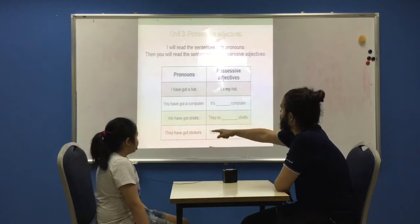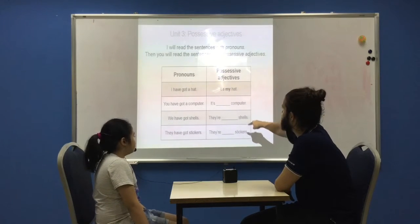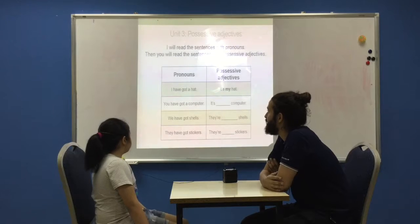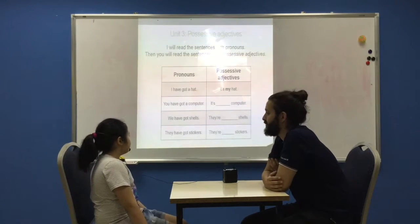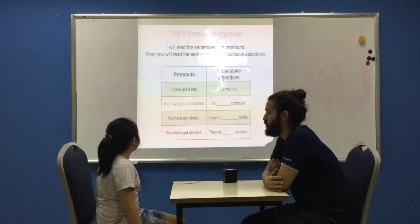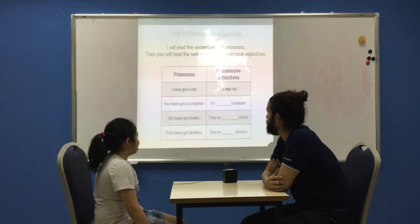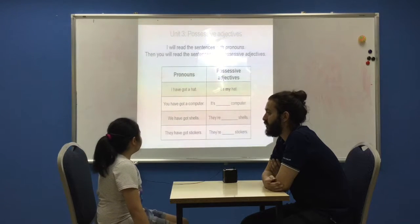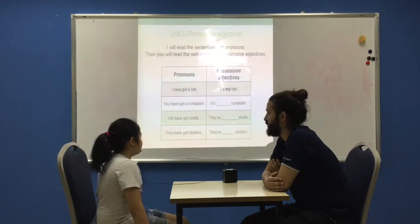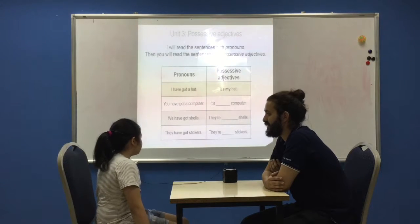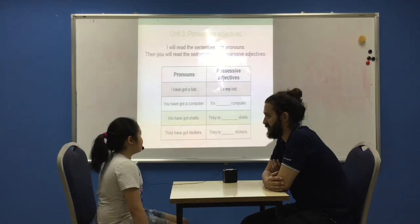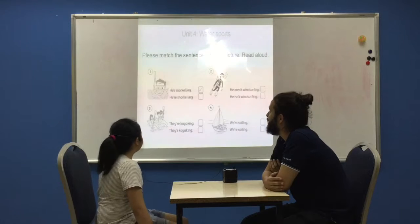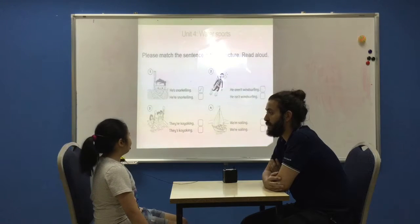I will read the sentences with pronouns and you read the sentences with possessive adjectives. I have got a hat. My hat. You have got a computer. Your computer. We have got shells. They are our shells. They have got stickers. Their stickers. Please match the sentence with the picture.